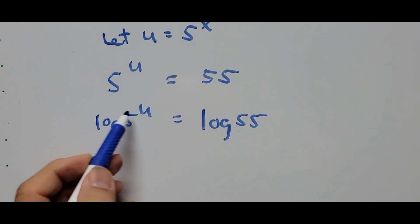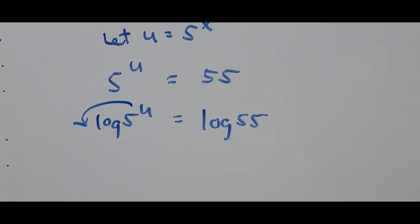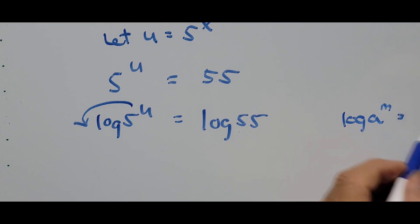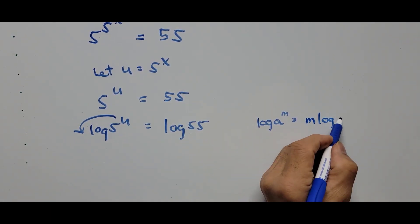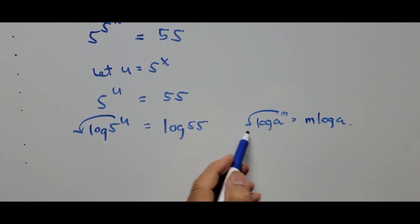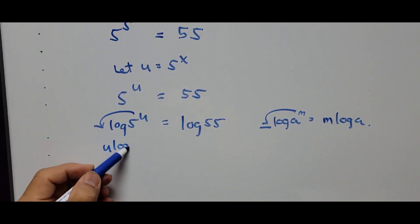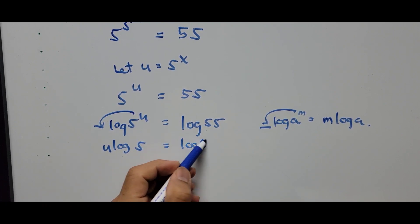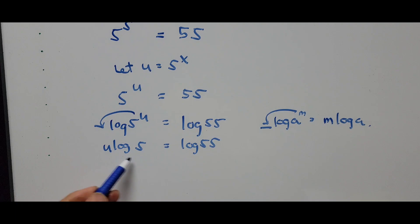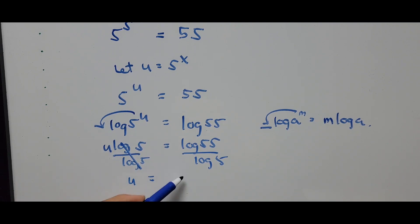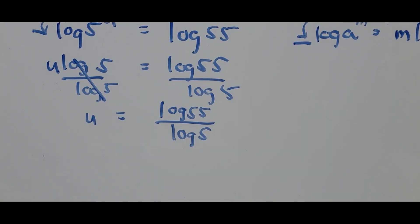From here, we bring down the exponent as a coefficient, using the logarithm property: log of a raised to m equals m times log of a. Applying this, the equation becomes u times log 5 equals log 55. Dividing both sides by log 5, we get u equals log 55 divided by log 5.